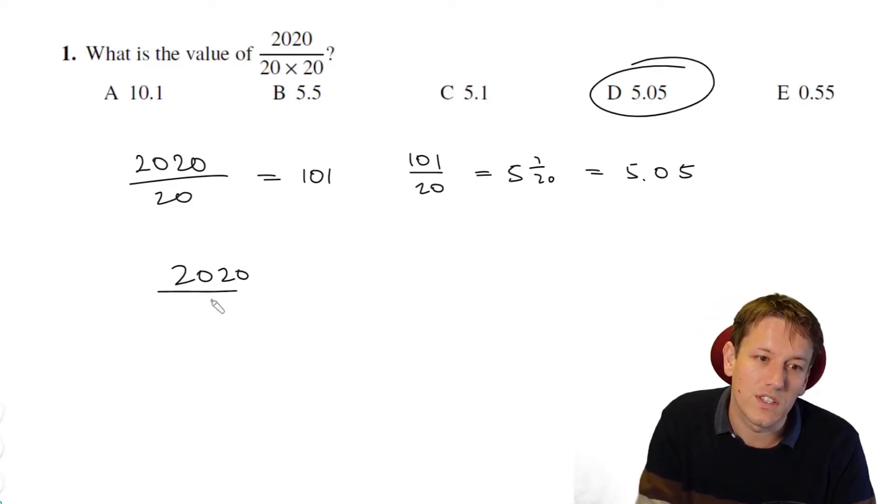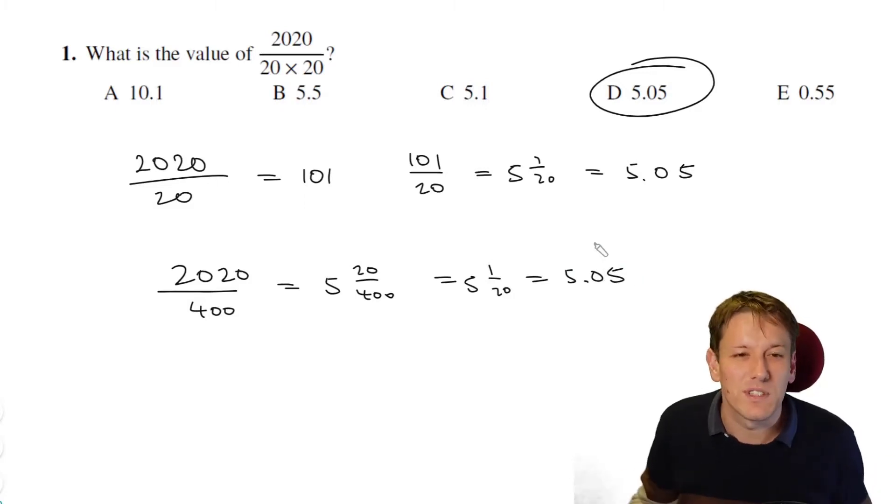You could, of course, just do 2020 over 400 as well, and you could say that that's 5 and 24 hundredths, and that will also simplify down to 5 and 1/20th, which is also 5.05, so different ways of doing the arithmetic here and simplifying down the fraction. The first question is meant to be just a bit of a warm-up, really.